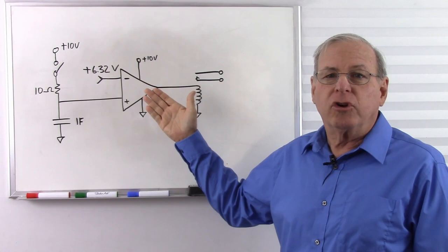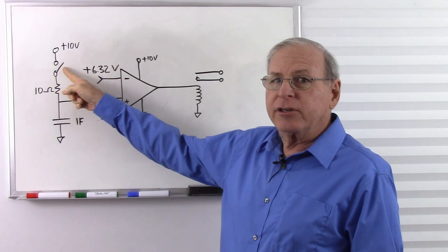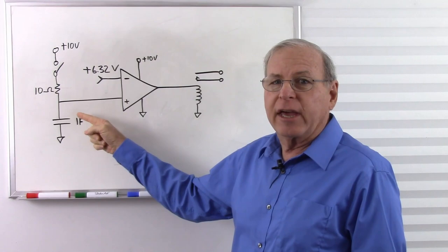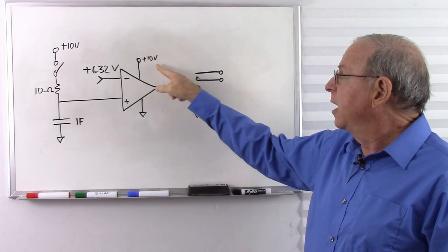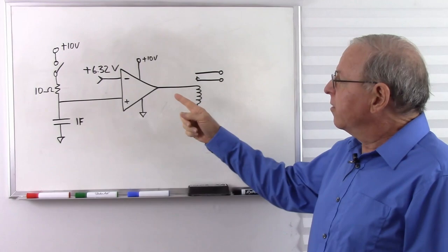This is the circuit he was talking about. It is simply a time delay circuit as an example of what you can do with an operational amplifier comparator. When I flip this switch, this capacitor charges up, and with this time constant it takes 10 seconds to reach the 6.32 volts that is applied to the inverting input, and when that does reach 6.32 volts, this voltage will jump up to 10 volts and turn on the relay.